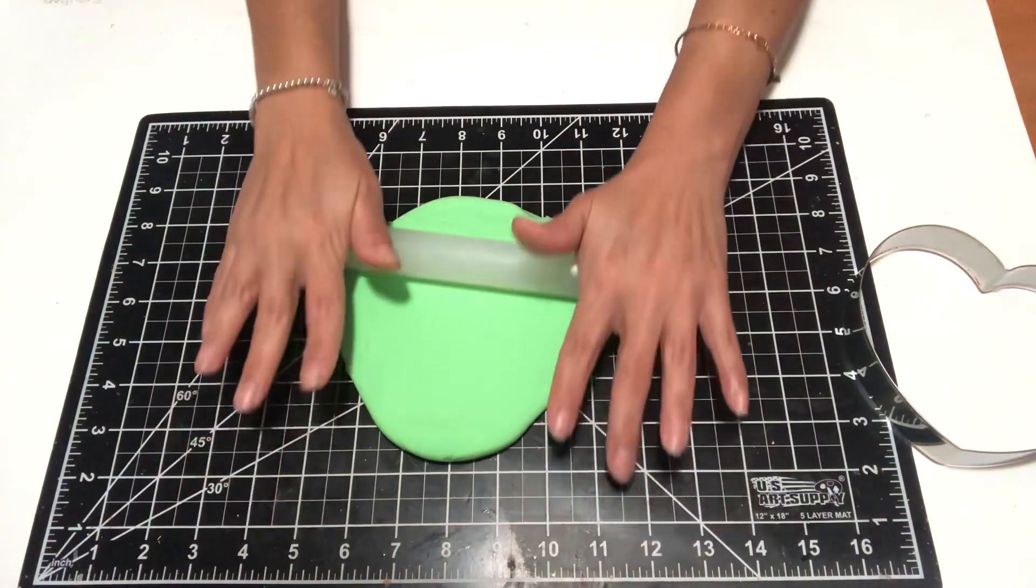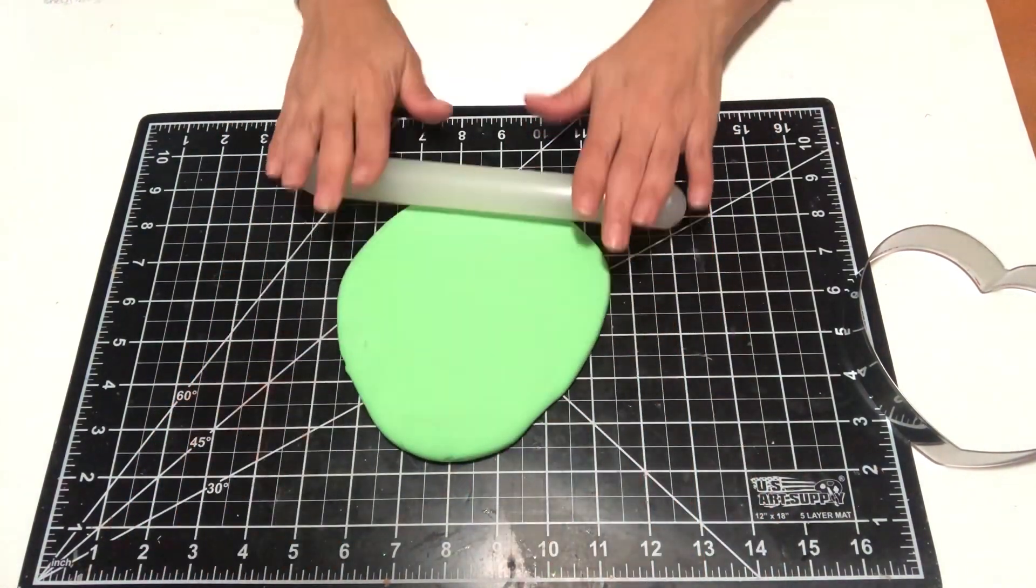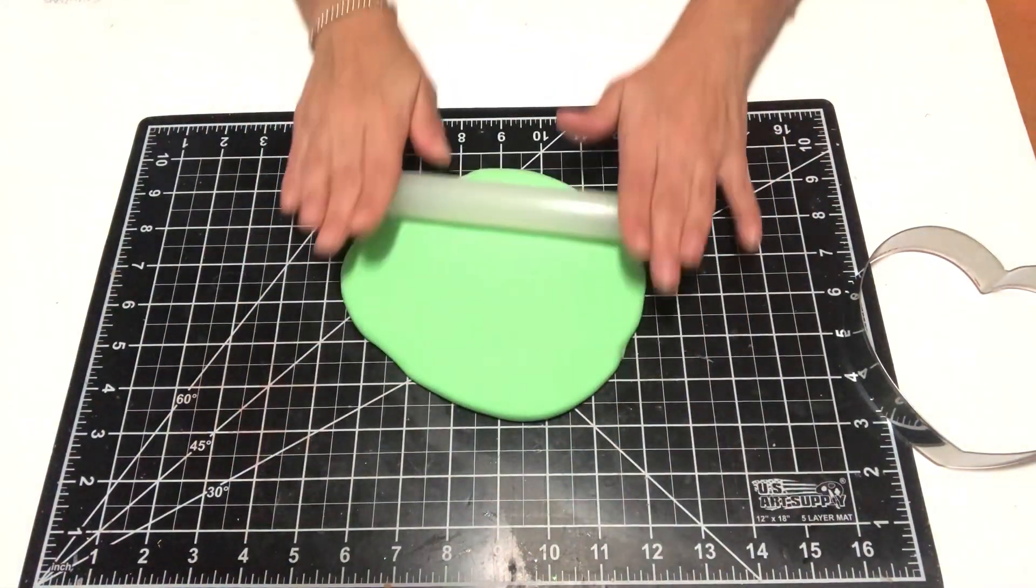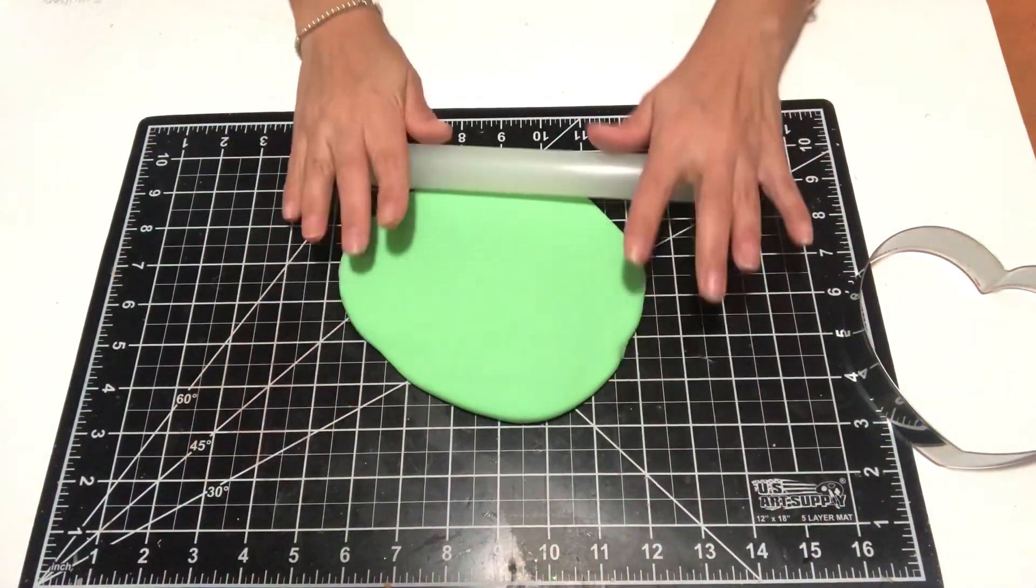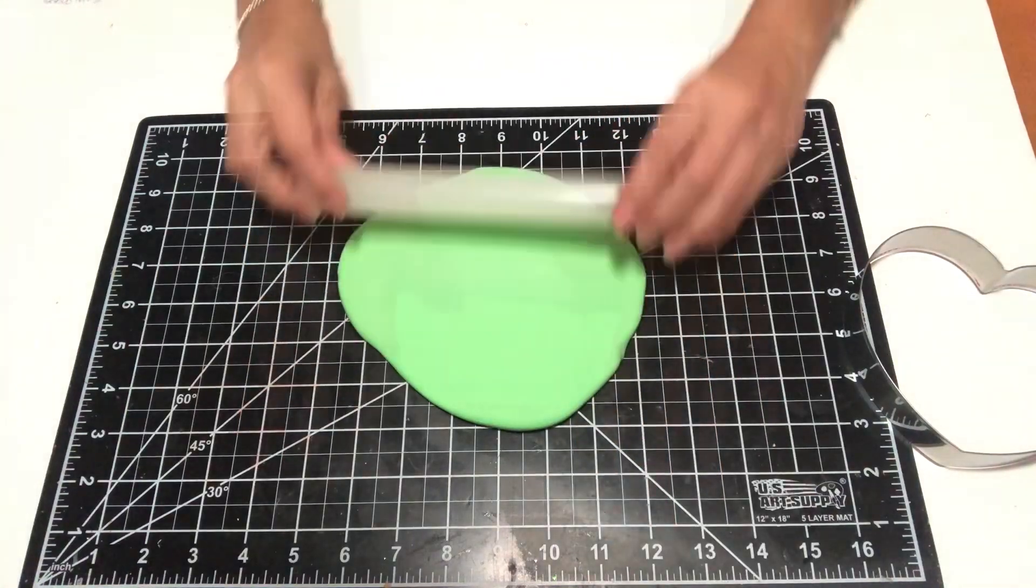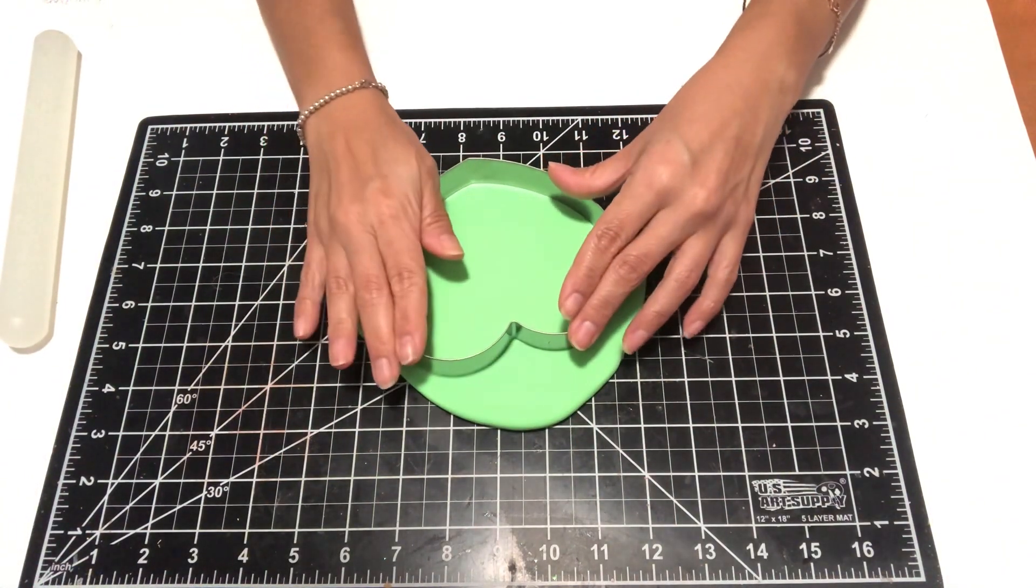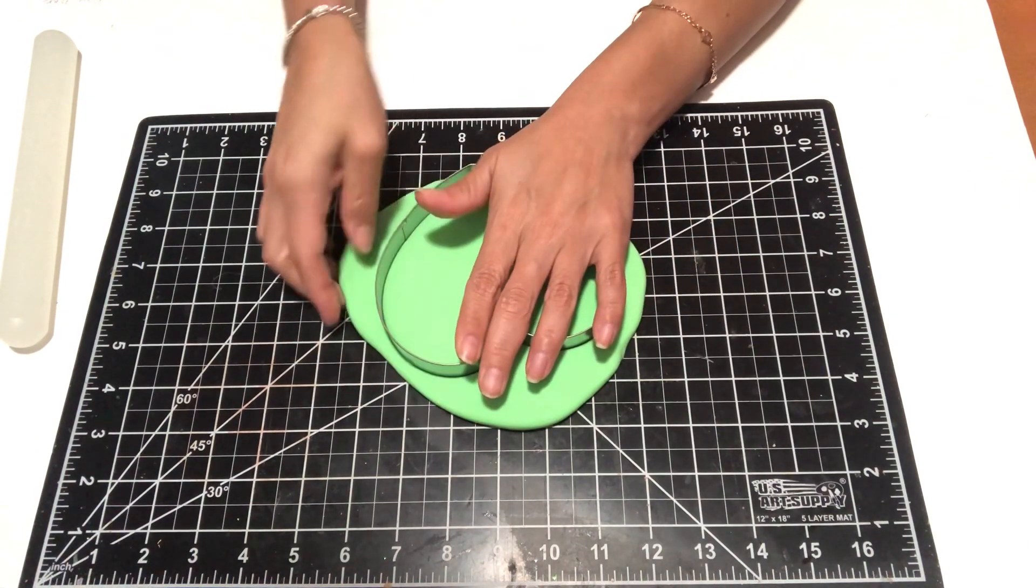Once I have my heart shape, then what I'm going to do, because I want to actually give it a, I want it to look like someone took a bite off of it, I am going to use a separate cookie cutter and then try to cut what's going to mimic teeth marks.